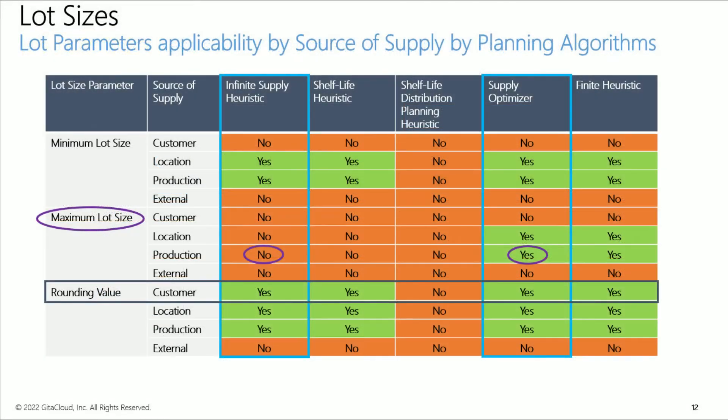You can expect charts to understand the big picture at a glance — for example, which supply planning algorithms respect which lot size parameter in a given source of supply.